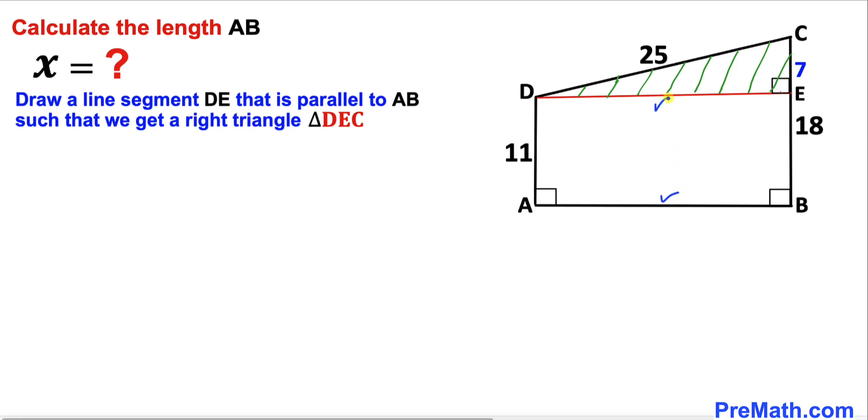Moreover, we know that these side lengths AB and DE are parallel to each other. These angles A and B are 90 degrees, so therefore this side length AB and this side length DE are equal. We know that this side length AB is x units, so this side length DE has got to be x units as well.